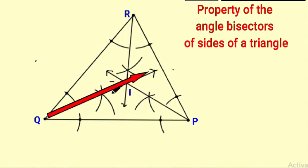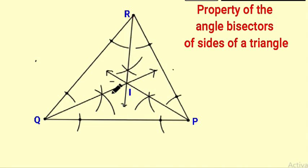Ray PI, ray QI, and ray RI are the angle bisectors of angle P, angle Q, and angle R. Observe that they are all concurrent and their point of concurrence is I.